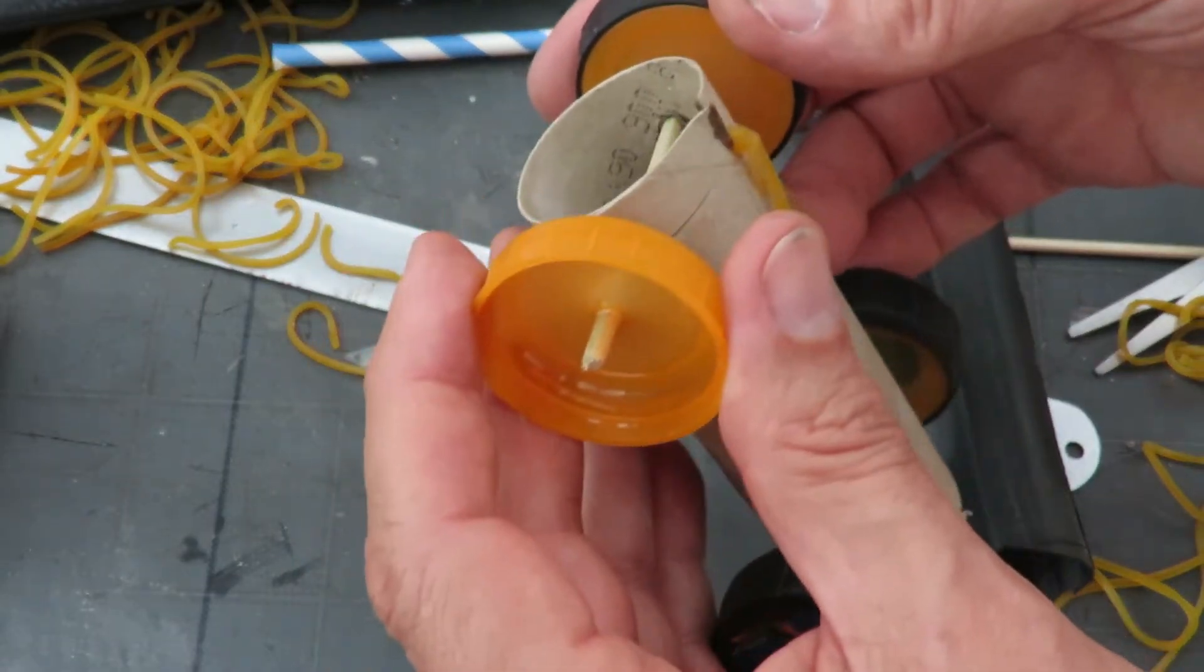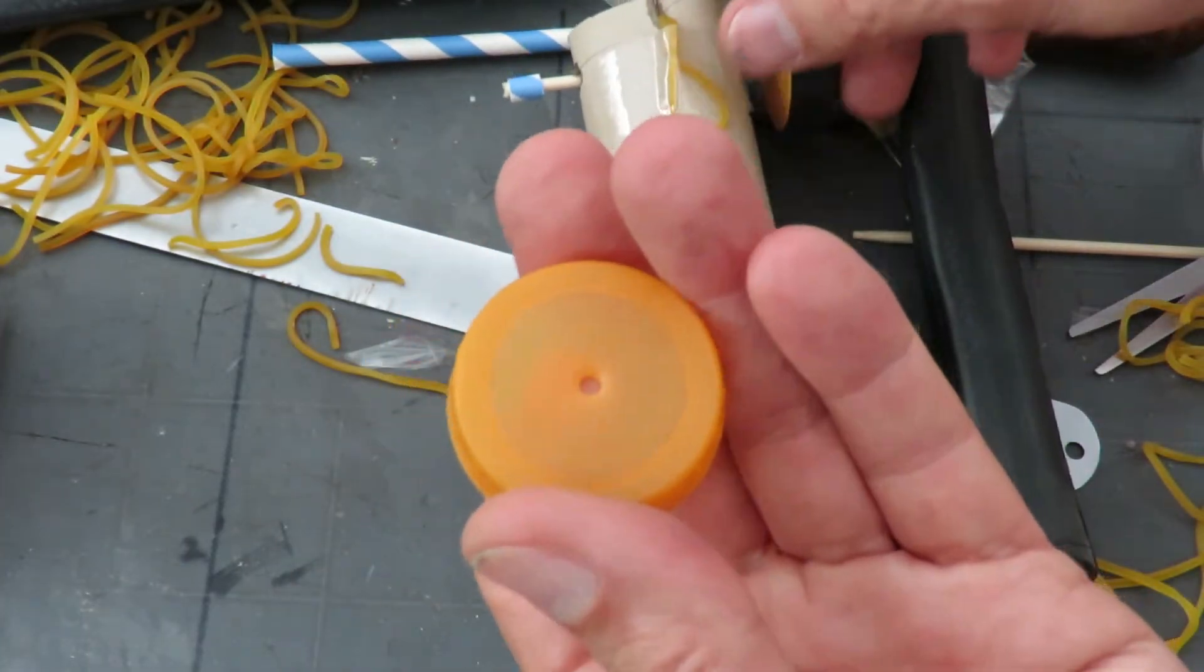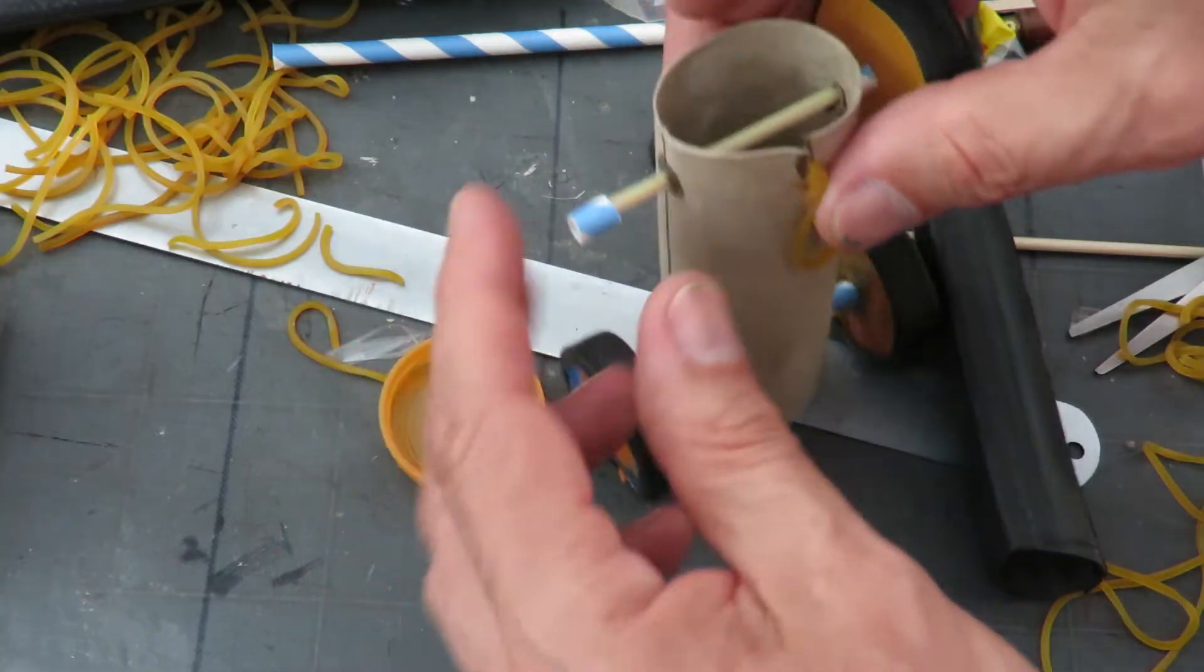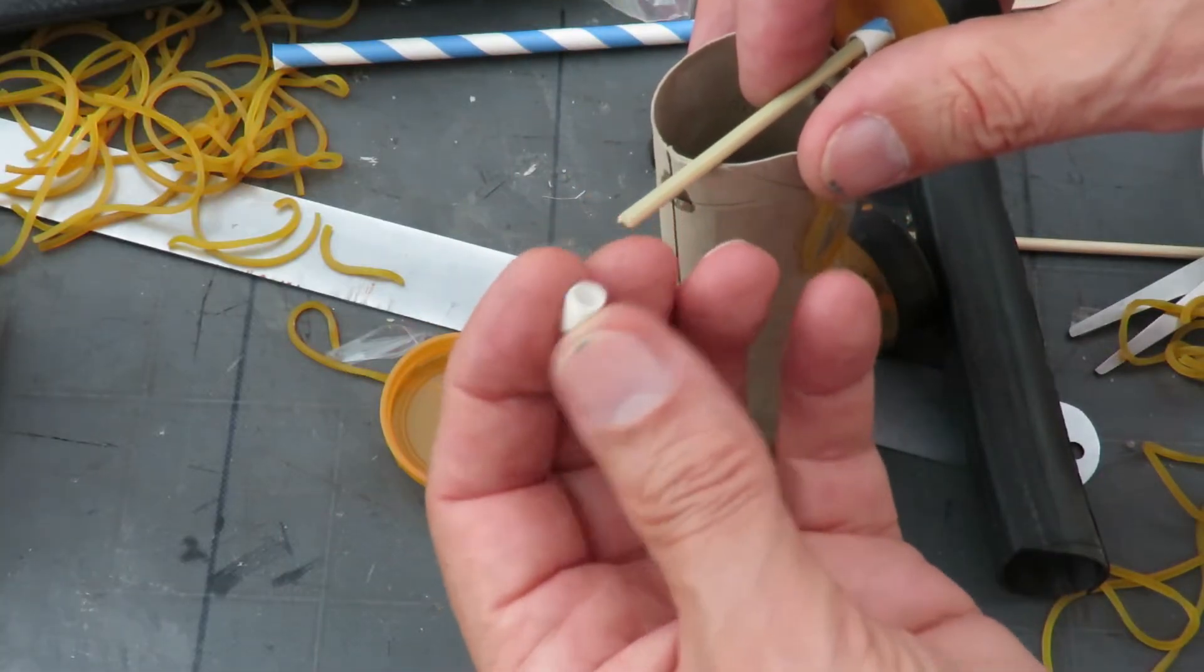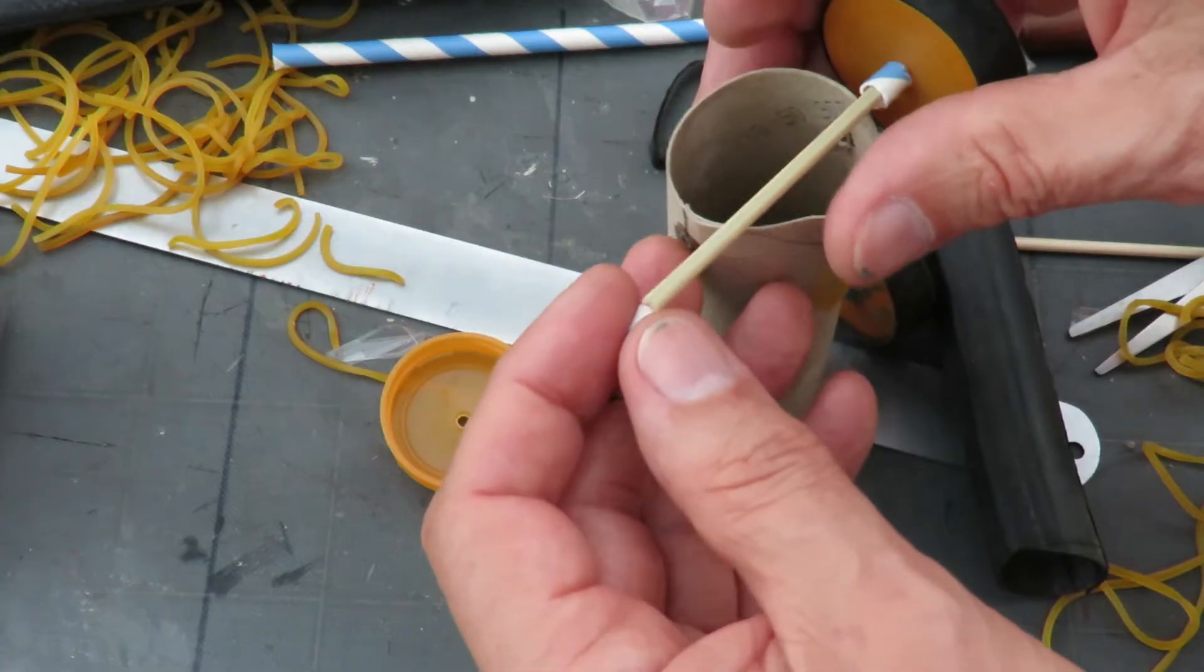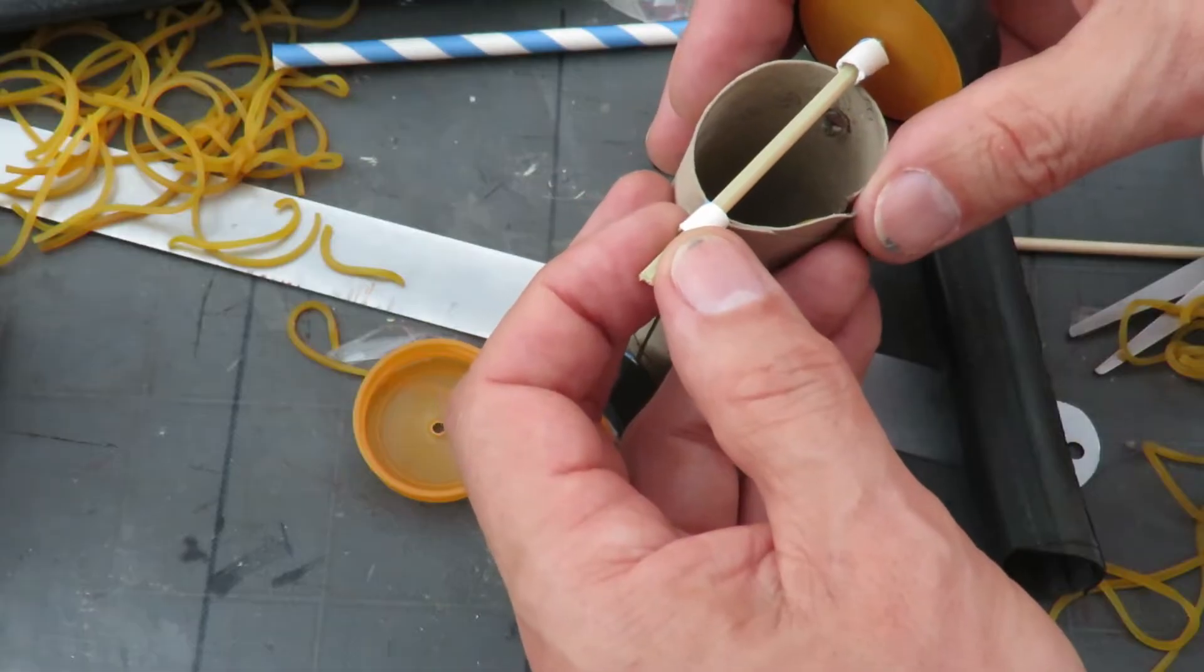So that's the wheels, they're ordinary milk bottle tops. I just pushed a hole in the middle and then pushed a barbecue skewer through. Then that's little bits of paper straw just to space them out so the wheels don't rub against the bodywork.